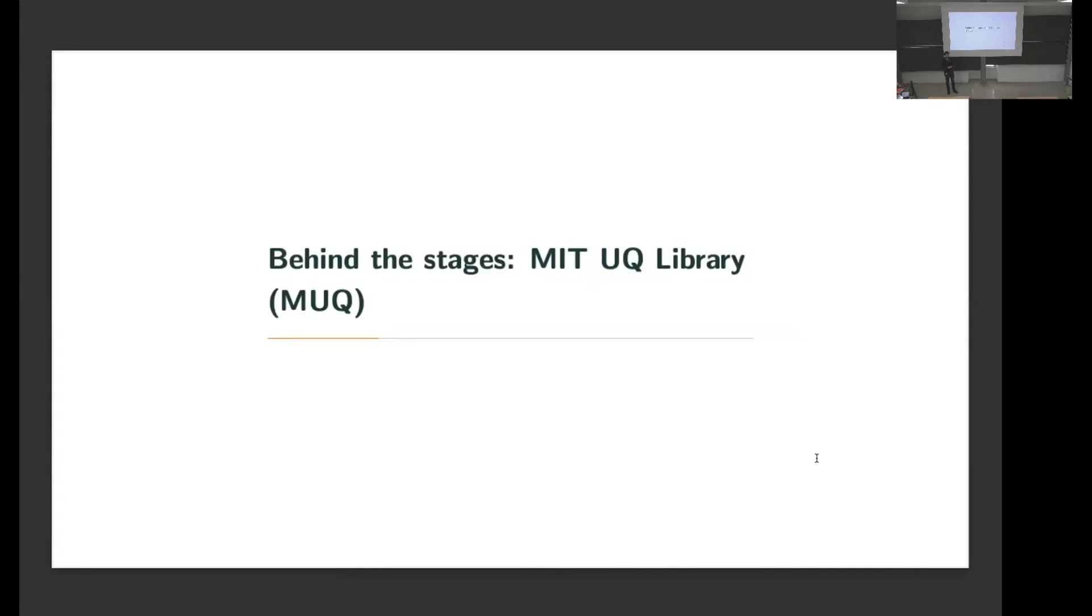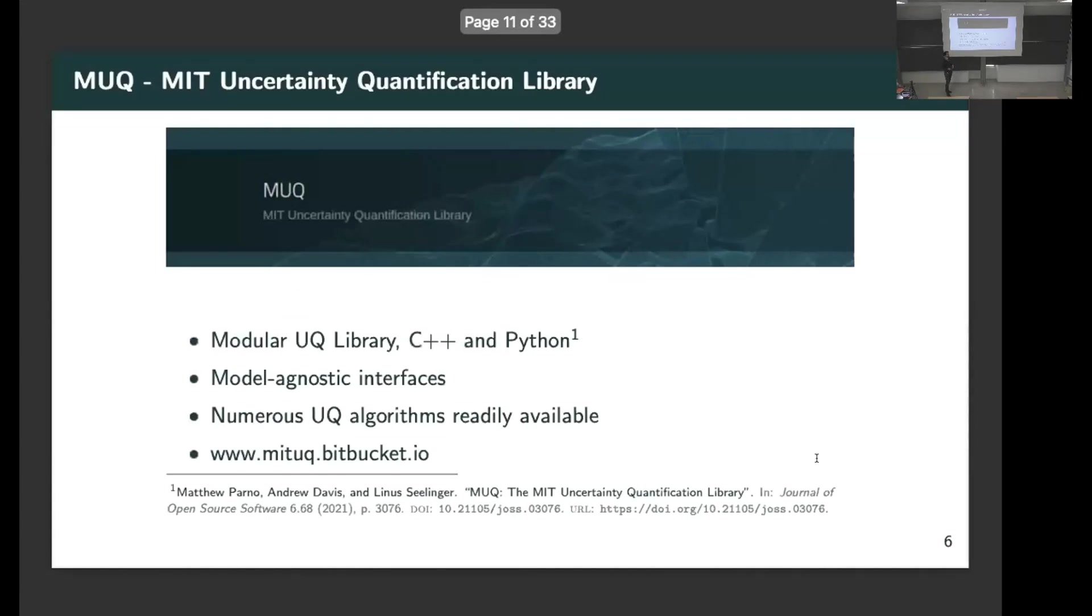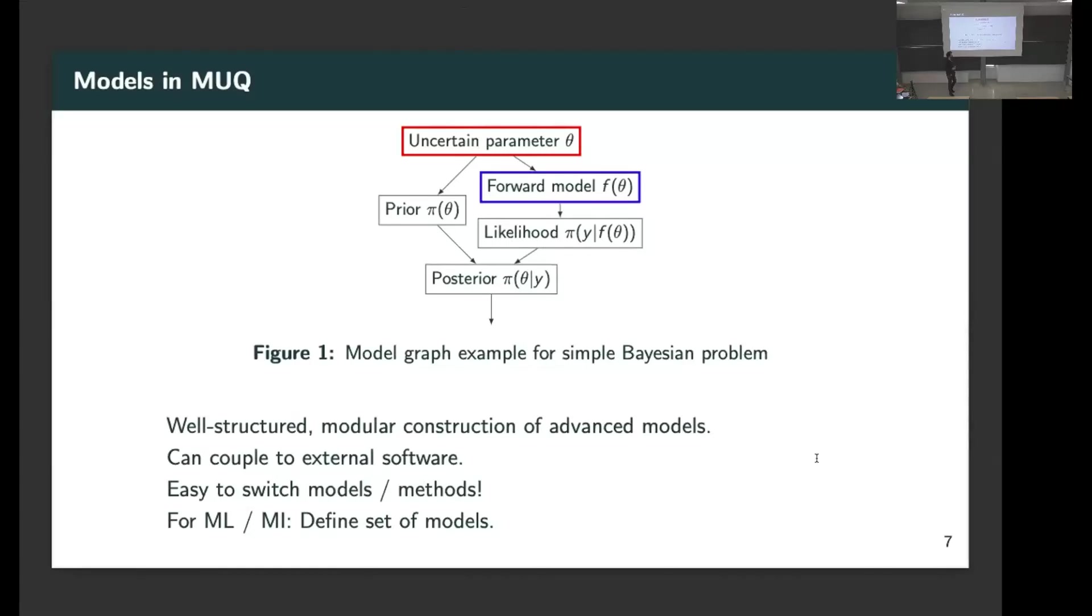Moving to the technical underpinnings of this all. The MIT Uncertainty Quantification Library is essentially a modular toolbox for UQ. It already contains a lot of implemented algorithms and also has some nice modeling interfaces. For example, if you build a Bayesian posterior in MUQ, then this can be represented in such a graph structure where a posterior is just a product with two densities.